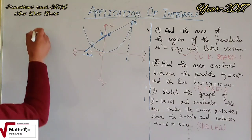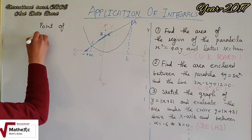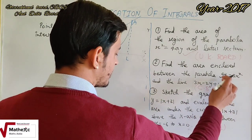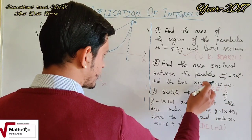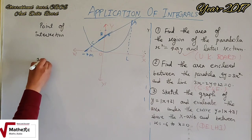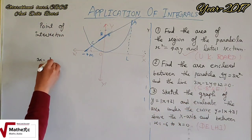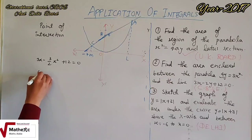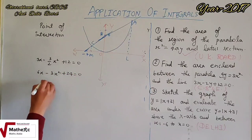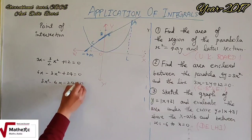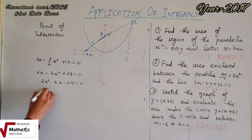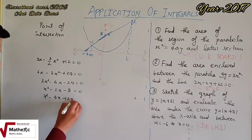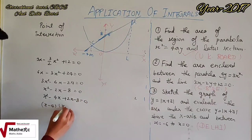Point of intersection के लिए दोनों equations को solve करेंगे। 2y की value निकालकर substitute करने पर 3x - 2y की जगह 3y²/4 आएगा। x² + 12 = 0 से 6x - 3x² + 24 = 0 → 3x² - 6x - 24 = 0। 3 common लेने पर x² - 2x - 8 = 0 → (x - 4)(x + 2) = 0।